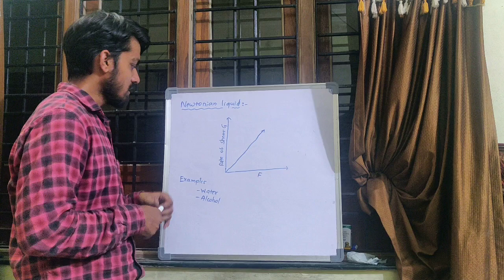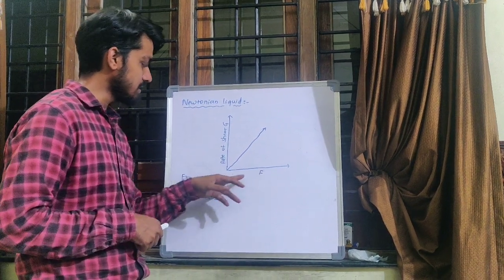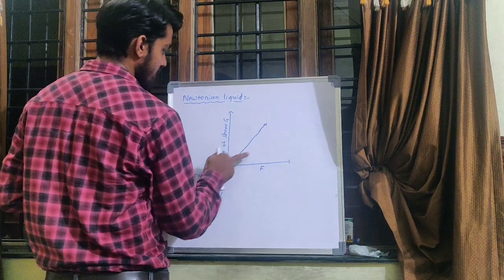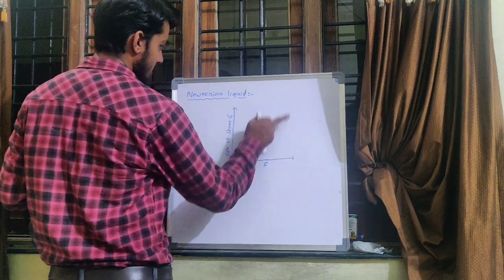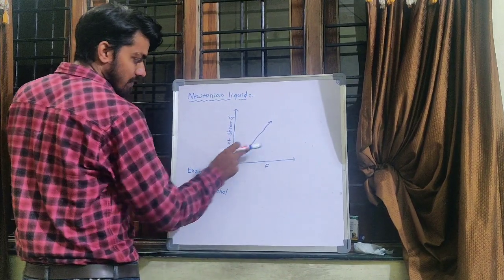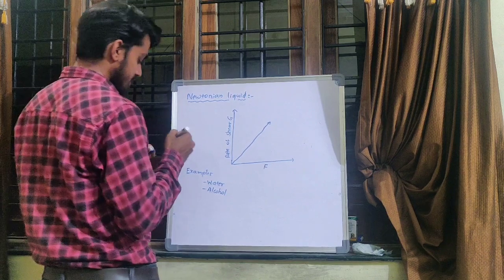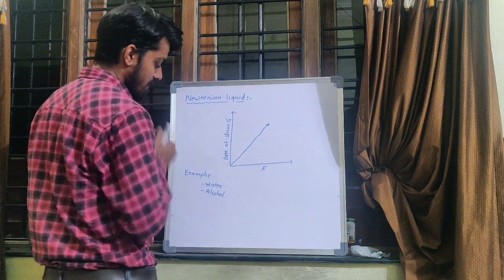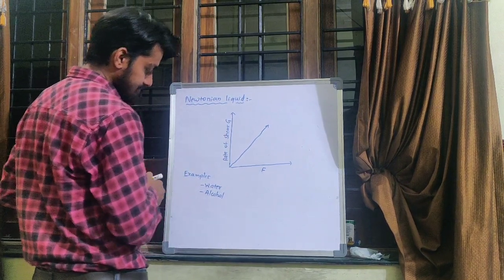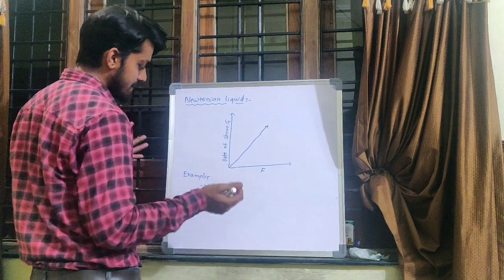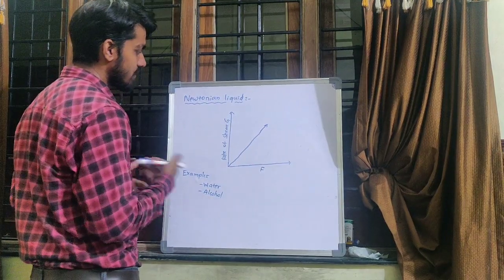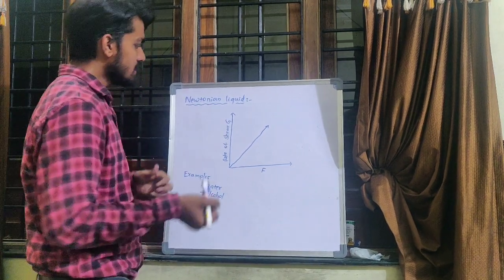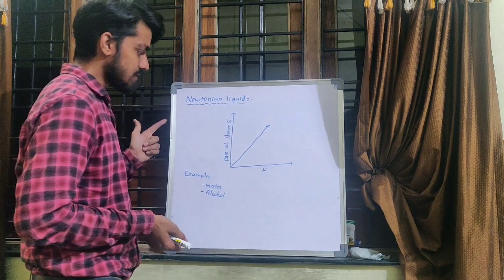If we draw a plot of rate of shear against shearing stress, we will get a straight-line graph. This graph represents that the rate of shear is directly proportional to the viscosity of the liquid. Examples of Newtonian liquids are water and alcohol. Just pause the video and take the screenshot.